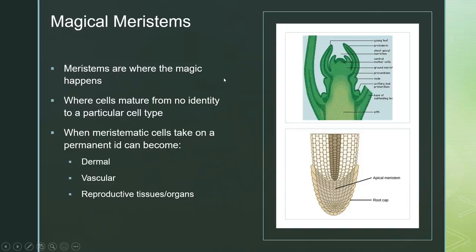Meristematic regions are really cool — these are the stem cells of plants. They have no identity; they can become whatever they want. Under the root cap — which protects young cells as the root grows and elongates through soil — are the meristematic cells. The root cap produces specialized cells that help the root move through inhospitable soil. The apical meristem is the top growing point of any stem; it can become a flower or give rise to continued elongation.